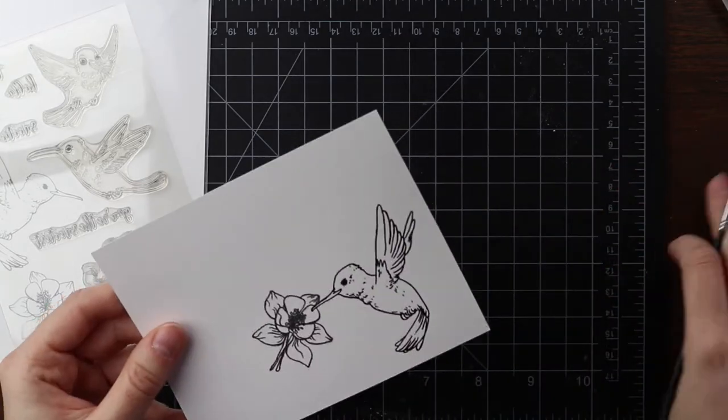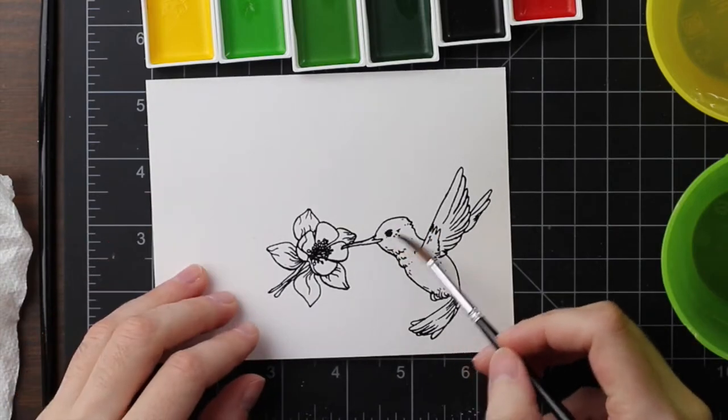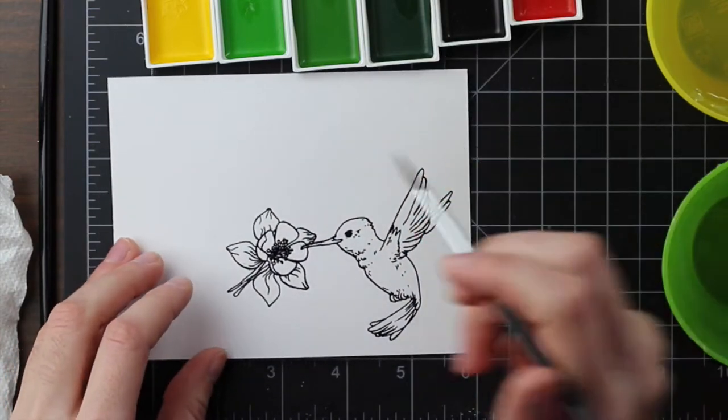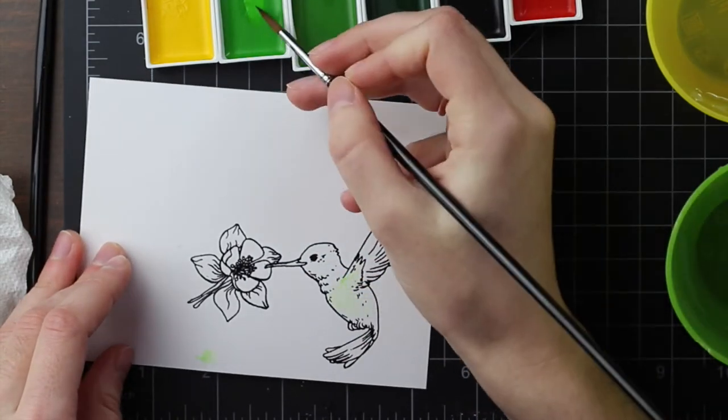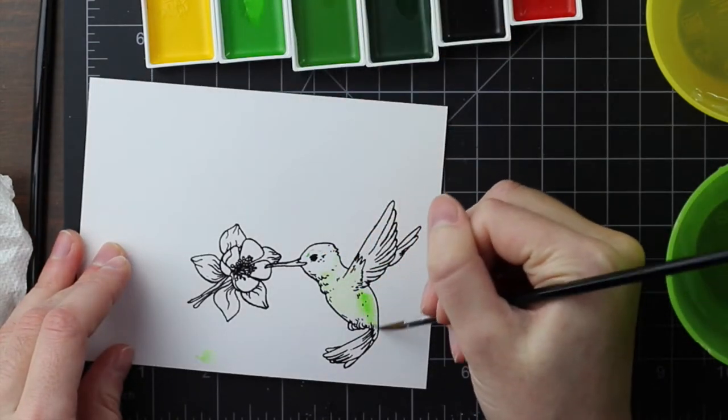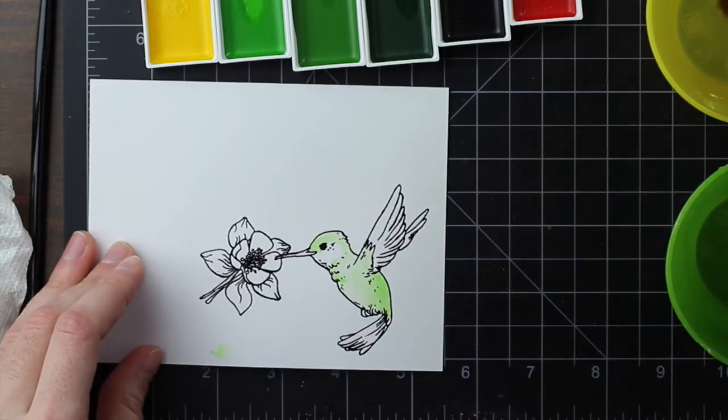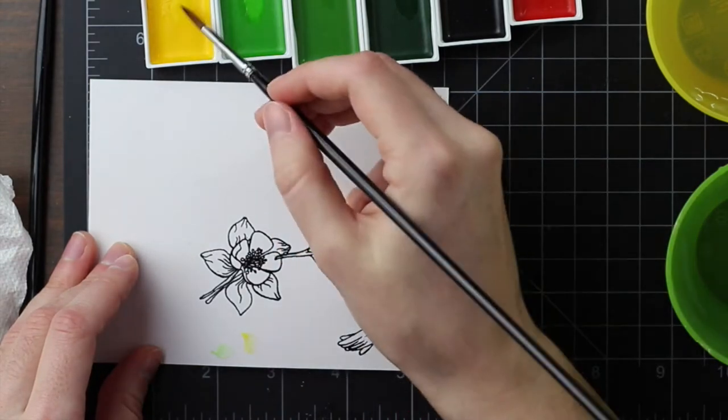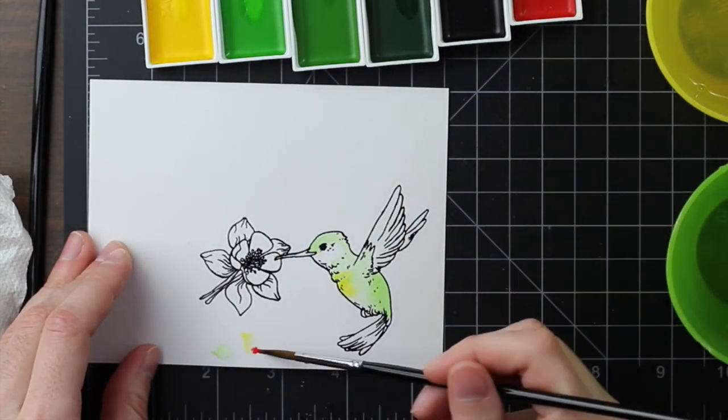For this little flower, I didn't mask off the little hummingbird beak. I didn't mask it off because I could just stamp the flower, add my embossing powder to it, and then use a paintbrush to kind of wipe away those two little lines. So no fancy masking, just wipe the extra embossing powder. After I've heat set that, I'm going to start my watercoloring.